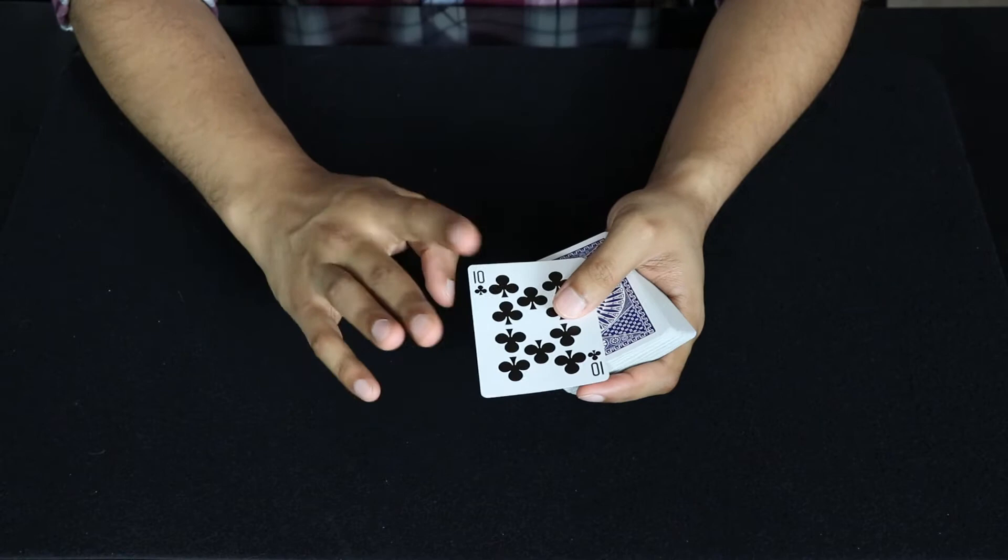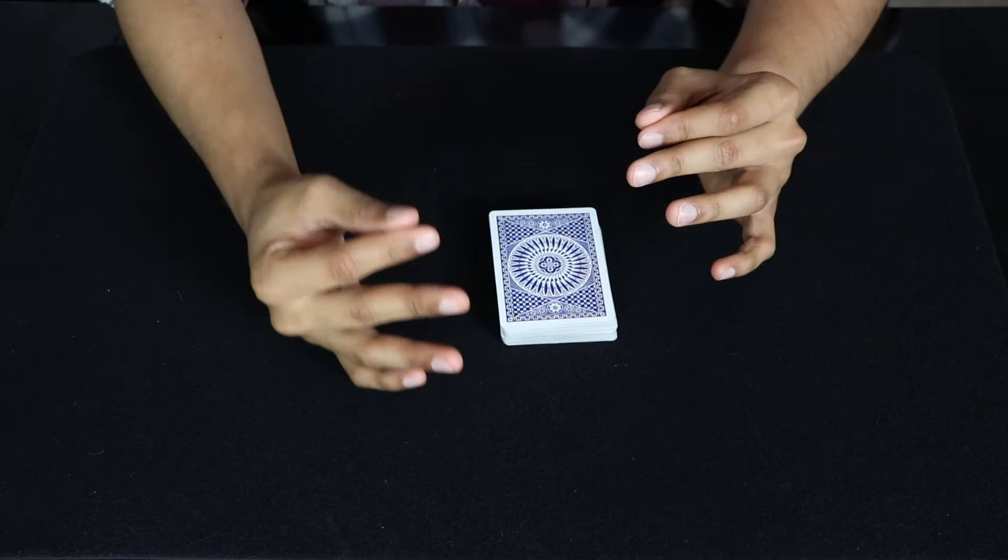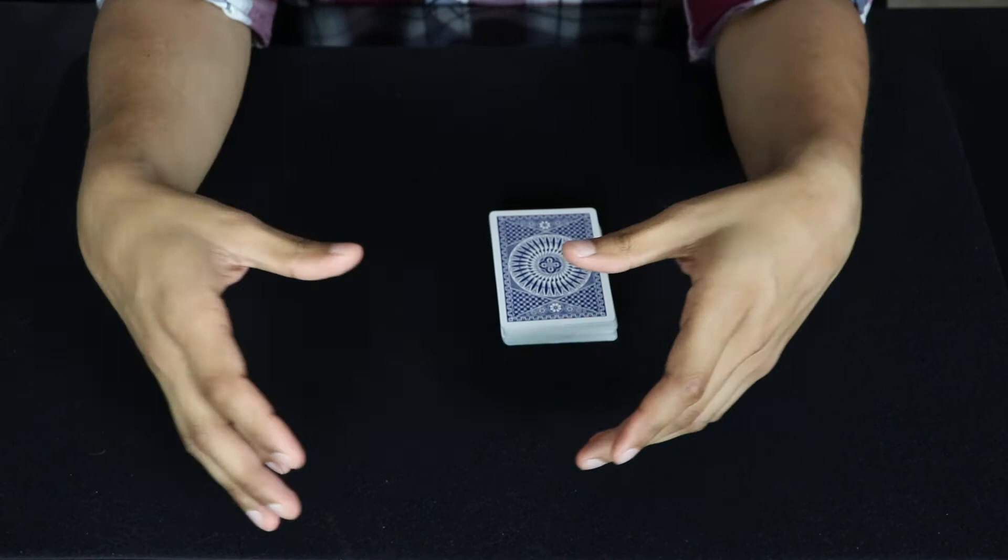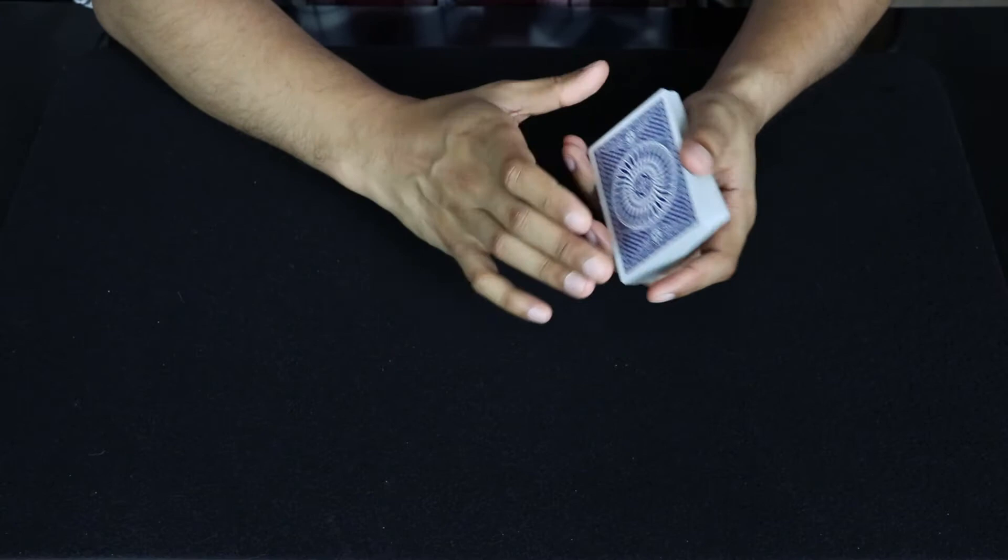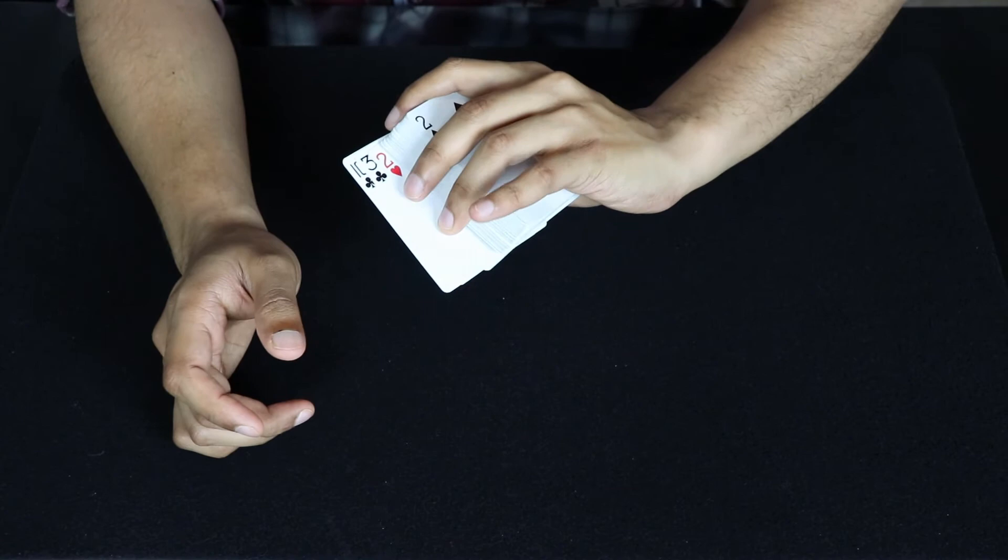But now you have the Ten of Clubs on top of the deck. So at this point, what I like doing is giving the Spectator an imaginary card, or having them think of their card and pretend they're holding it in their hand. So now once they've done that, we're actually going to, since their card is on top, we're going to start dealing out cards, not one at a time. So here's how we're going to deal. We're going to push over the top three cards, get a pinky break underneath, and set it up like this. So pinky break underneath the top three cards.